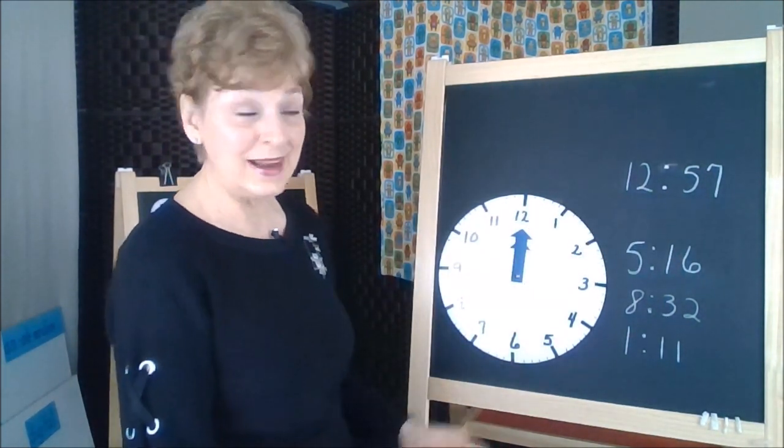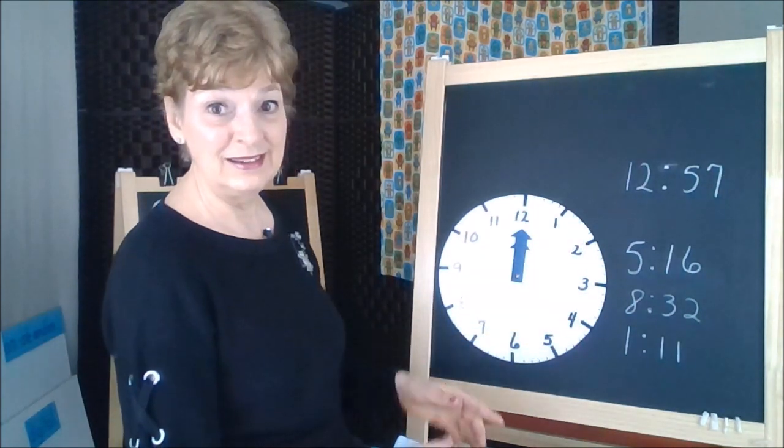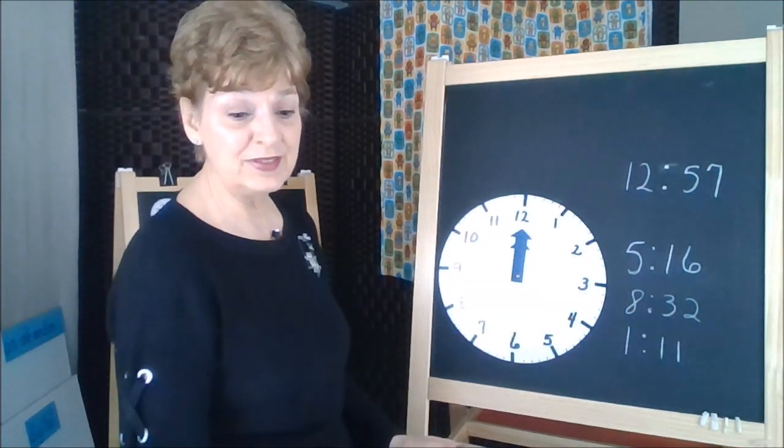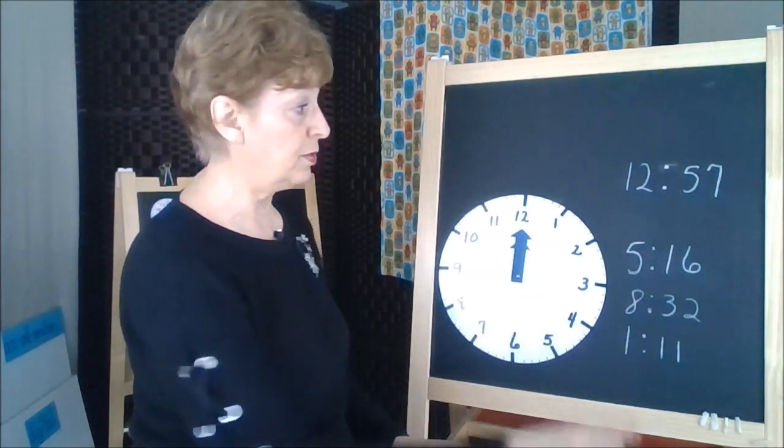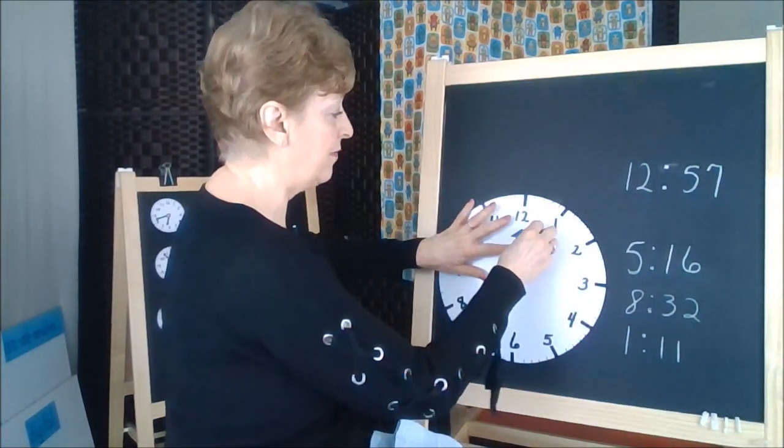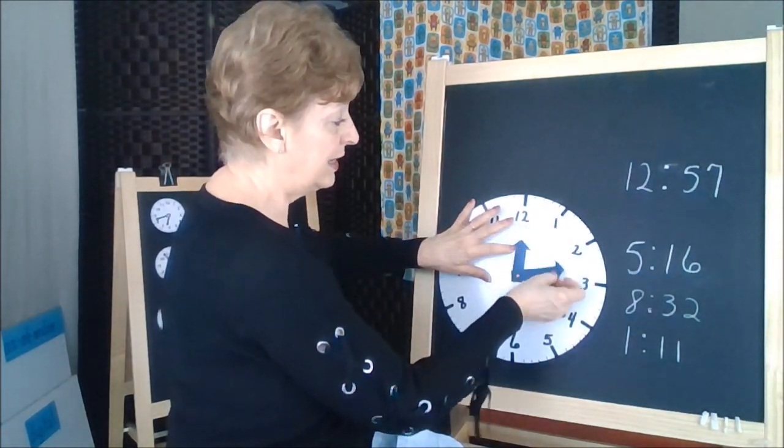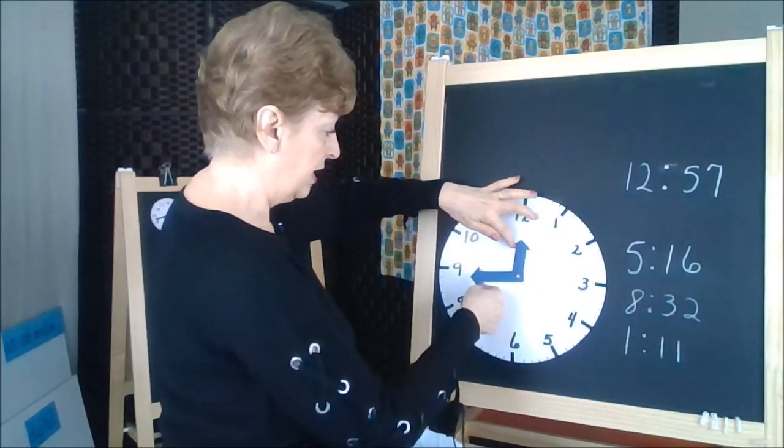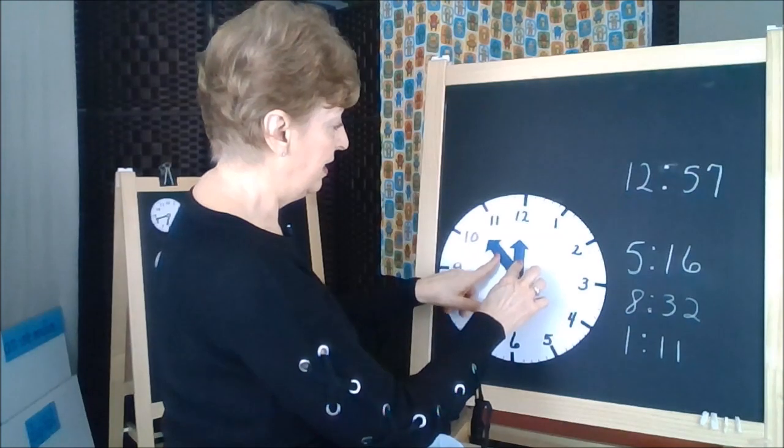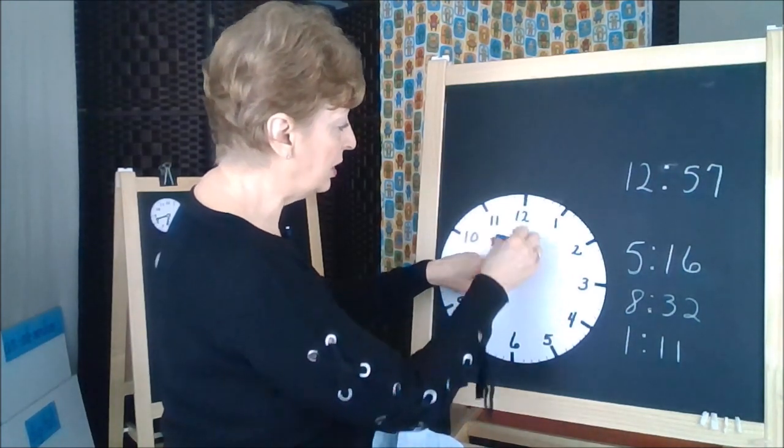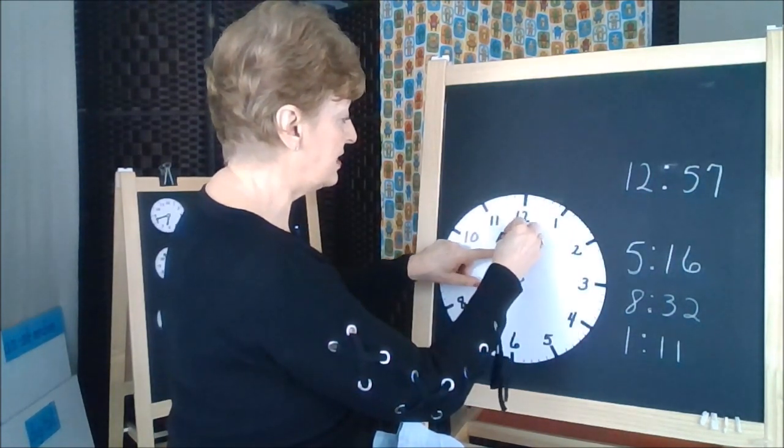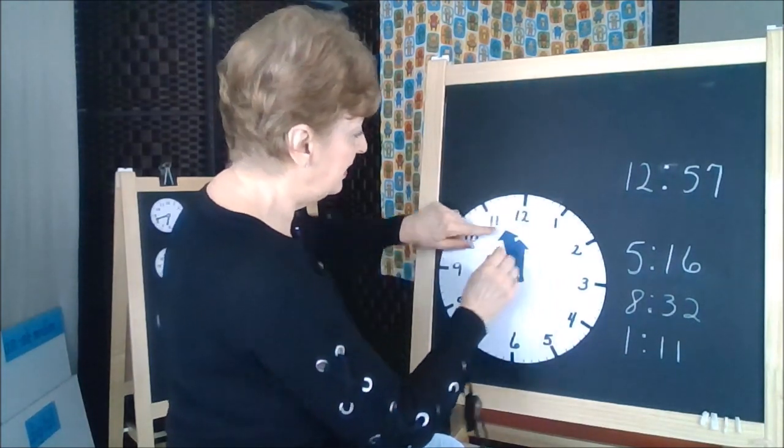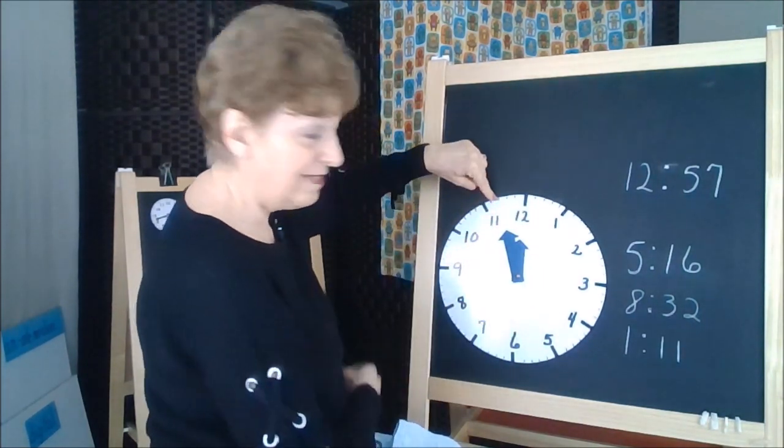Now we have to do 57. Do you really want to count all the little dots between? Let's count by 5s and get close to 57 with our counting by 5s: 5, 10, 15, 20, 25, 30, 35, 40, 45, 50, 55. I'm close. Now I have to do 56, 57. See how it's 57? It's right there.